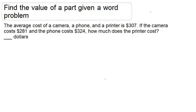Find the value of a part given a word problem. The average cost of a camera, a phone, and a printer is $307. If the camera costs $281 and the phone costs $324, how much does the printer cost?